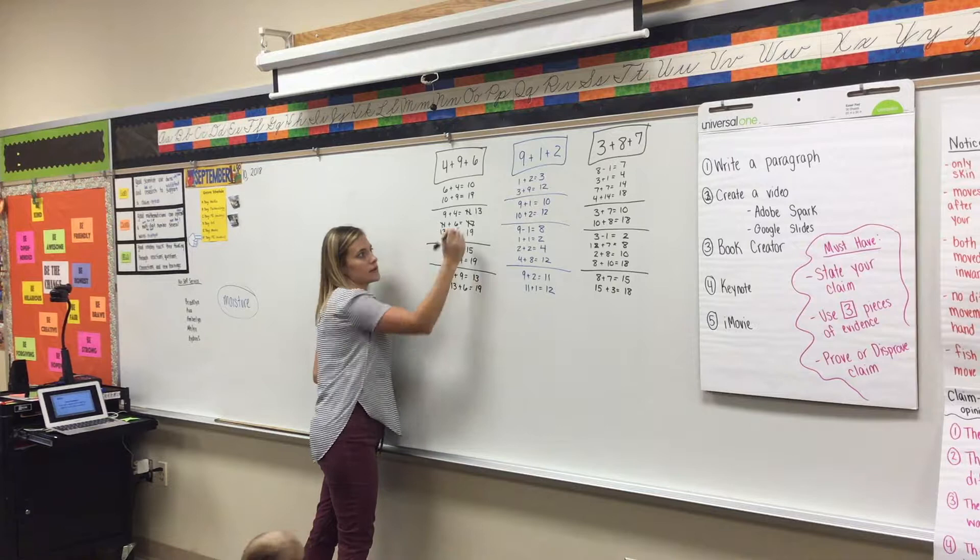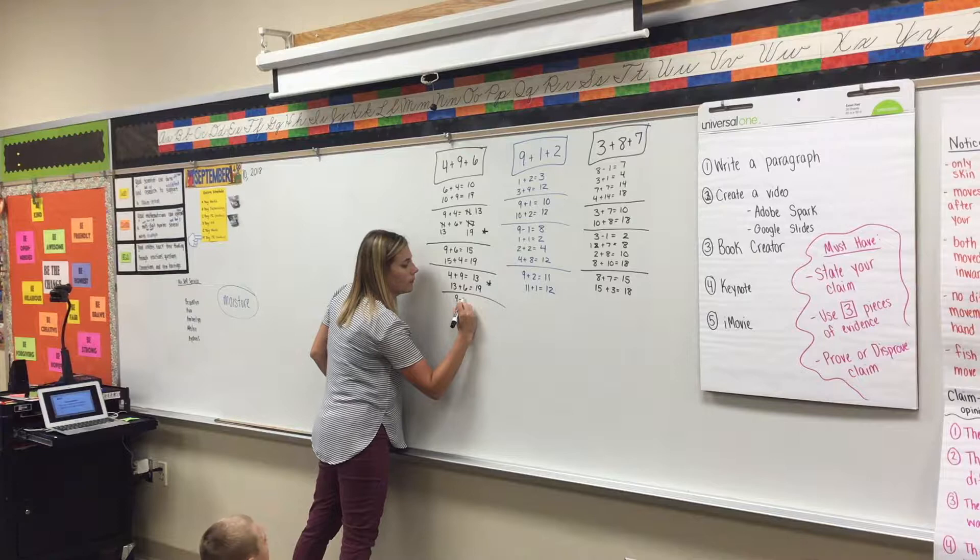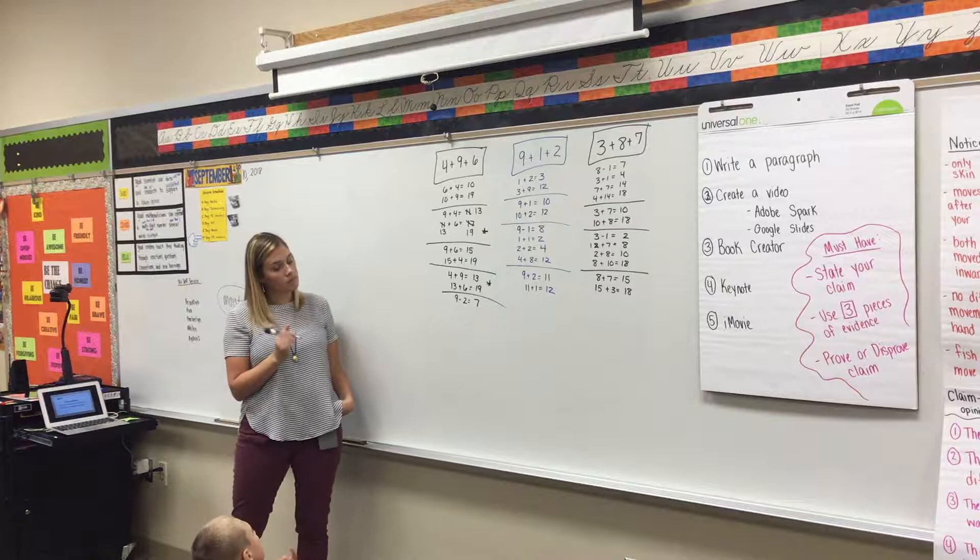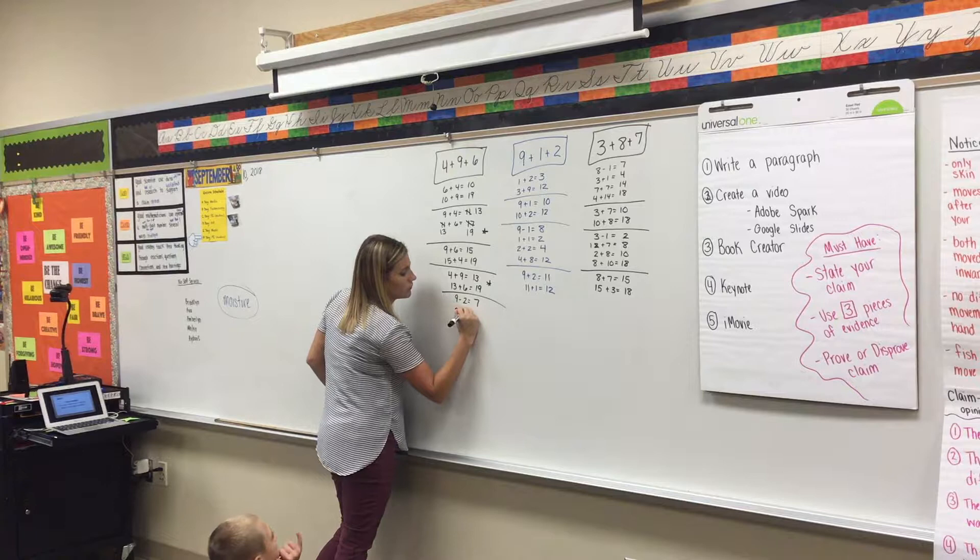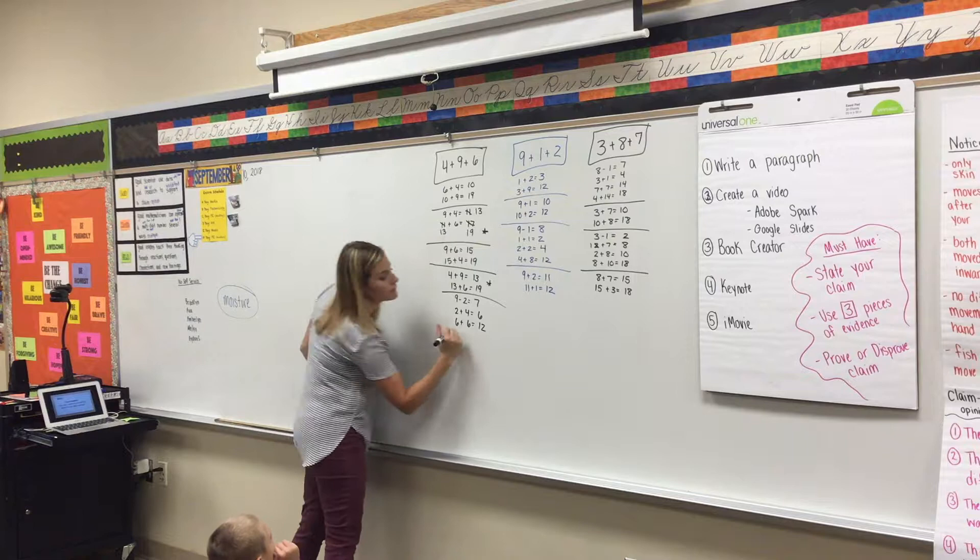Any other last ways since these two are really the same? Okay, Sarah. I subtracted 2 from the 9 and then that was 7. I agree with that. And then I put in 2 with the 4 and made 6. So then I put 6 plus 6 equals 12, and then 12 plus 7 equals 19.